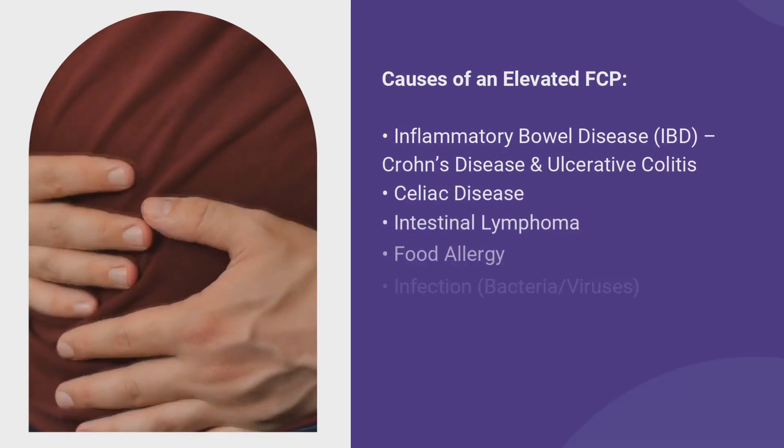Fecal calprotectin is the first test we want to talk about. This is a test for intestinal inflammation. Inflammation in your bowel occurs because calprotectin is a breakdown product of white blood cells, and when you have inflammation it can go up.